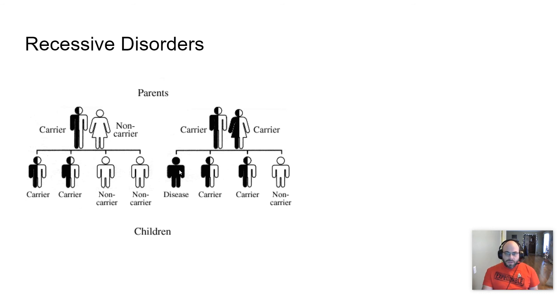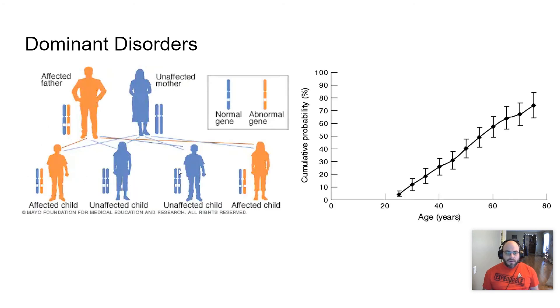Hemophilia is one that we talked about in a previous video with sex-linked traits. An example of a dominant disorder is called Huntington's disease. And Huntington's disease is a progressive neurological disorder that is usually fatal or eventually fatal. Not usually. It always is fatal.